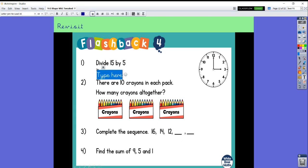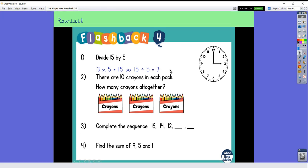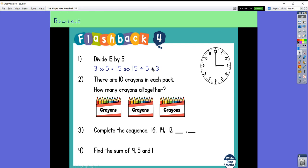Great stuff. I decided to do this one by saying that I know 3 times 5 equals 15. So 15 divided by 5 equals 3. You might have used some equipment to help you get that answer or drawn a picture and that's perfectly fine too.